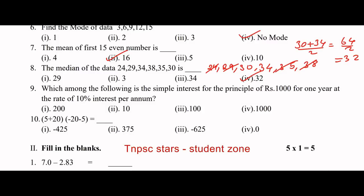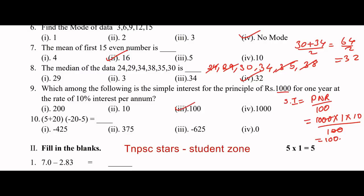Which among the following is the simple interest for a principal amount of 1000 for one year at a rate of 10% per annum? Simple interest formula: PNR divided by 100. Principal is 1000, number of years is 1, rate of interest is 10. So 1000 into 1 into 10 divided by 100 equals 100. Simple interest is 100. Option 3.